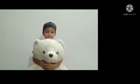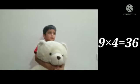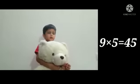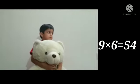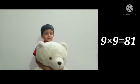10 times 8 equals 80. 9. 1 times 9 equals 9. 2 times 9 equals 18. 3 times 9 equals 27. 4 times 9 equals 36. 5 times 9 equals 45. 6 times 9 equals 54. 7 times 9 equals 63. 8 times 9 equals 72. 9 times 9 equals 81.